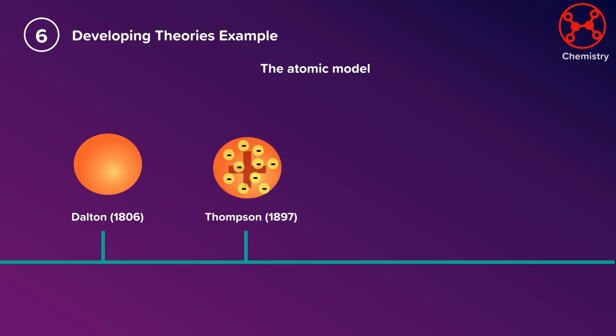Further down the line, in 1897, J.J. Thompson used his investigations to propose the plum pudding model of the atom, explaining why atoms have no overall charge.